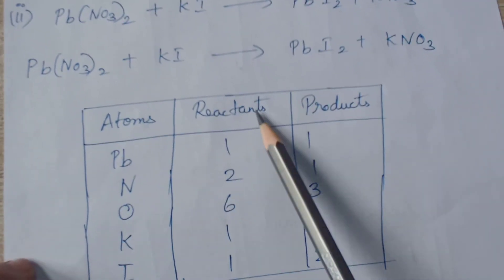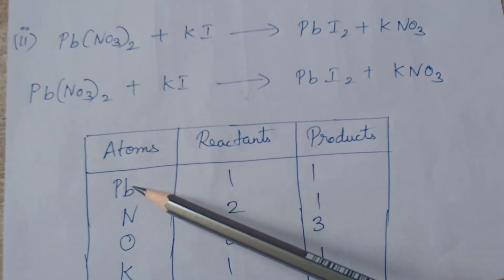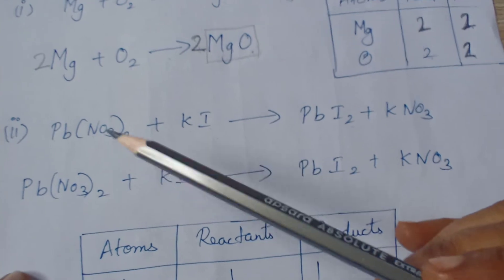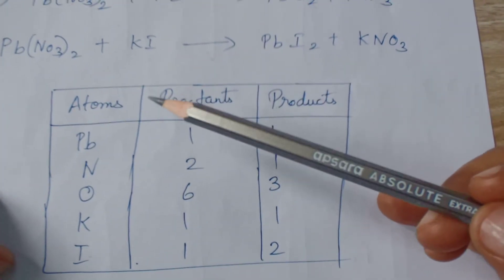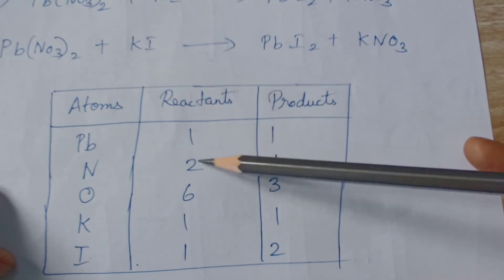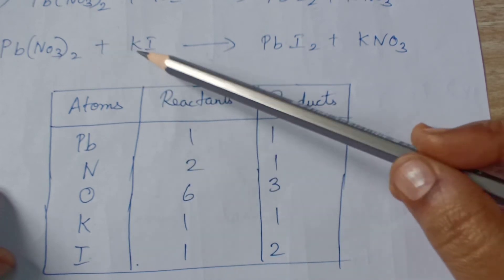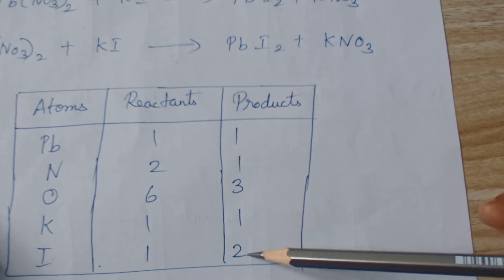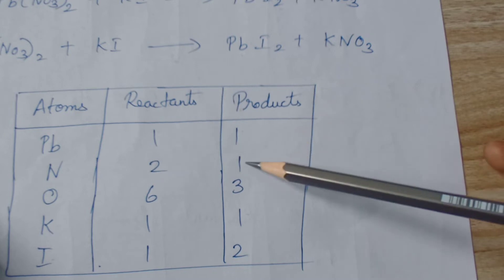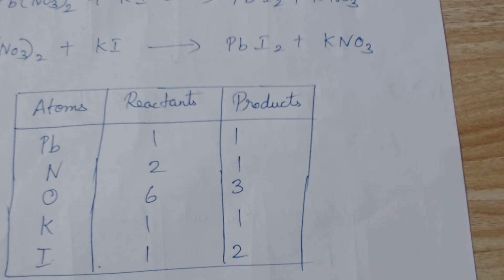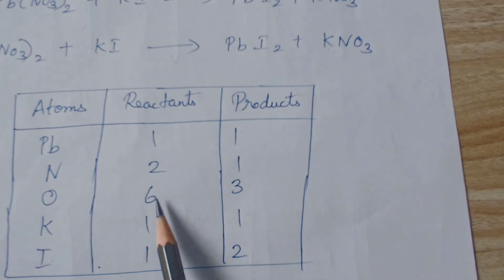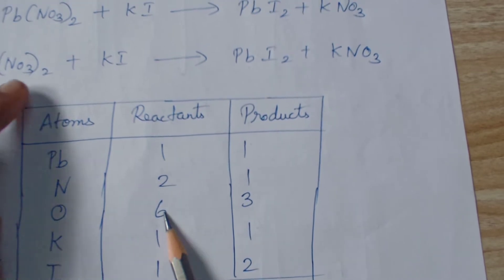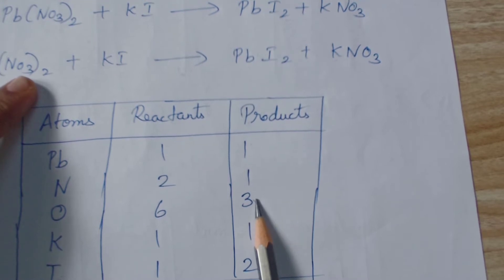Write the atoms in a tabular column: lead, nitrogen, oxygen, potassium, iodide. In the reactant side: 1 lead, 2 nitrogen, 6 oxygen (3×2), 1 potassium, 1 iodide. In the product side: 1 lead, 2 iodide, 1 potassium, 1 nitrogen, 3 oxygen. First balance oxygen — it has the maximum count of 6. We need the product oxygen to also be 6.